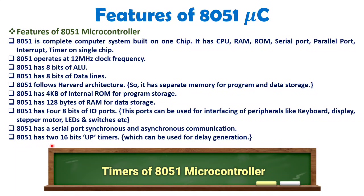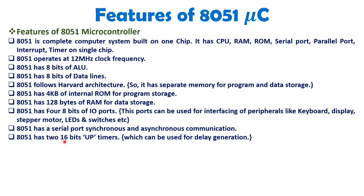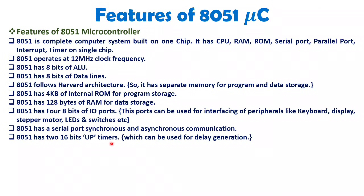The 8051 has two on-chip timers, each 16 bits in size. These timers can be used for many applications such as delay generation. The timers can also be used as counters — for example, in an industry with a conveyor belt, you can count how many products pass through by giving a clock signal. There are many applications where these timers function as counters, and the 8051 provides two 16-bit timers for this purpose.